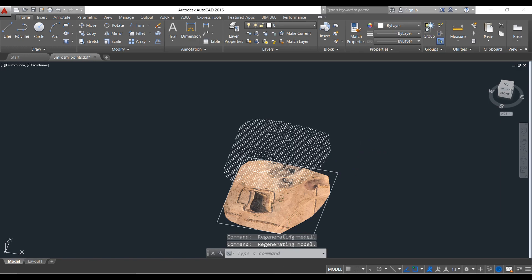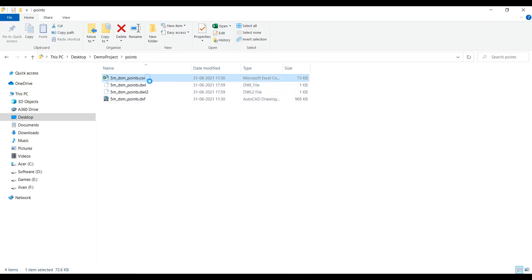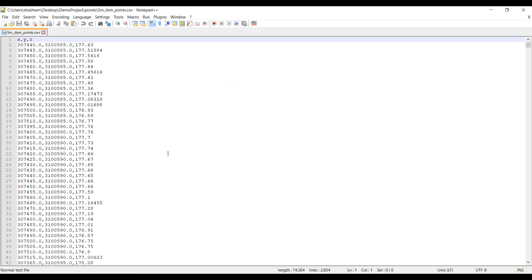Also, we have got one CSV file too. This file can be imported in other softwares like AutoPlotter, Civil3D, GlobalMapper, etc., and can be used for planning purposes.